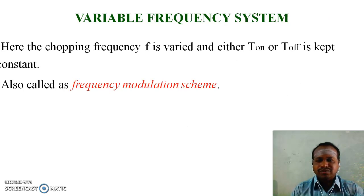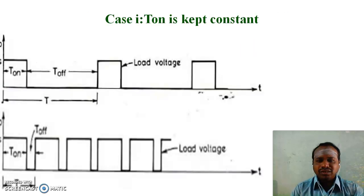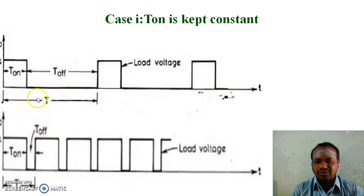Variable frequency system: Here, the chopping frequency F is varied, and either Ton or Toff is kept constant. This is also called the frequency modulation scheme. In Case 1, where Ton is kept constant, Toff is varied. Due to the variation of Toff, the time period is varied and frequency is varied, so it is known as the frequency modulation system.